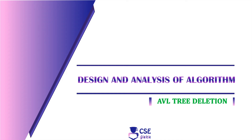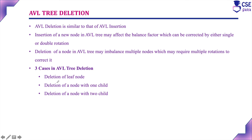Welcome to CSE Guru. In this session we will discuss AVL tree deletion. There are three cases in AVL tree deletion: deleting a leaf node, deleting a node with one child, and deleting a node with two children. In the previous session we discussed deleting a leaf node with an example. Now in this session we are going to discuss the second case — deletion of a node with one child.